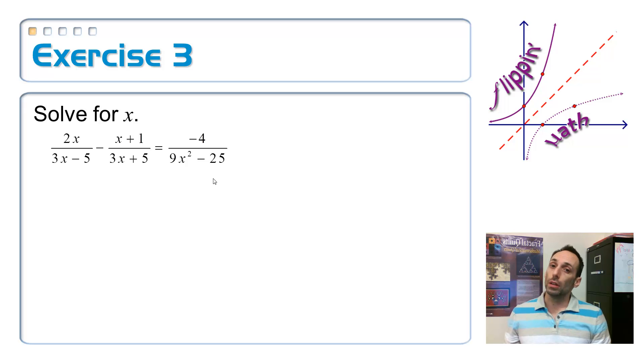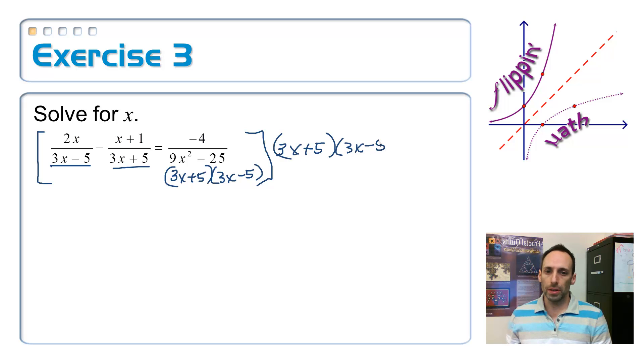9x squared minus 25 looks like the difference in two squares. 3x plus 5 and 3x minus 5. And would you look at that? That just happens to be the same two factors that I have over there. Sometimes these things are made to work like that. They just, whoever's making these math problems up, they're doing that just to kind of make it easier for you. So if I multiply both sides of this by 3x plus 5 times 3x minus 5, all my fractions, poof, going to disappear.